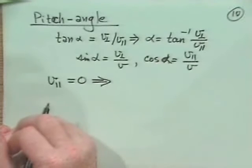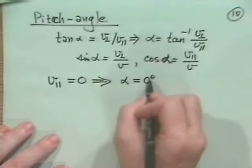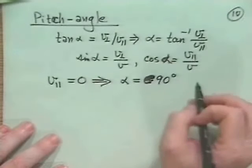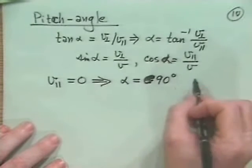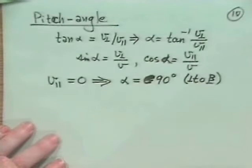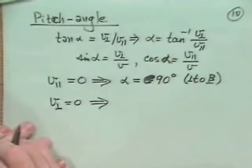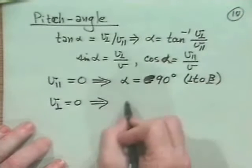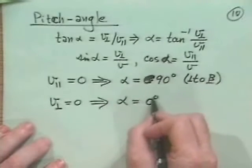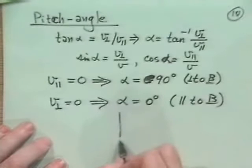Now, some sort of extremes of interest are if we have V parallel equals 0, then we would have only gyro motion. And that would be alpha equals 90 degrees. That's a 90-degree pitch angle, and that would actually be then perpendicular to the magnetic field B. On the other hand, if I had V perp is equal to 0, then the particle would be moving purely parallel, and that would be sine alpha equals 0, alpha equals 0. So that would be alpha equals 0 degrees, and that would be parallel to B.